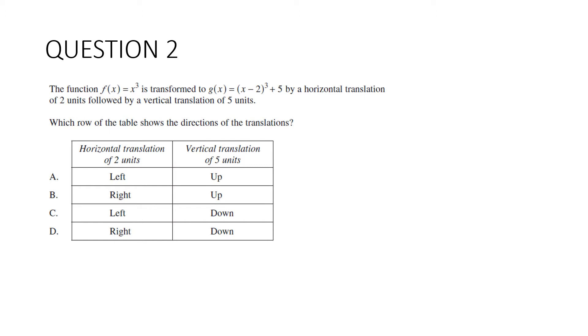Question two: the function f(x) = x³ is transformed to g(x) = (x - 2)³ + 5 by a horizontal translation of 2 units followed by a vertical translation of 5 units. Which row of the table shows the directions of the translations? So we'll start with this one here because this is going to be translated upwards. And so it's not c and it's not d. Now this part here, this is the horizontal translation, can be a little bit tricky.